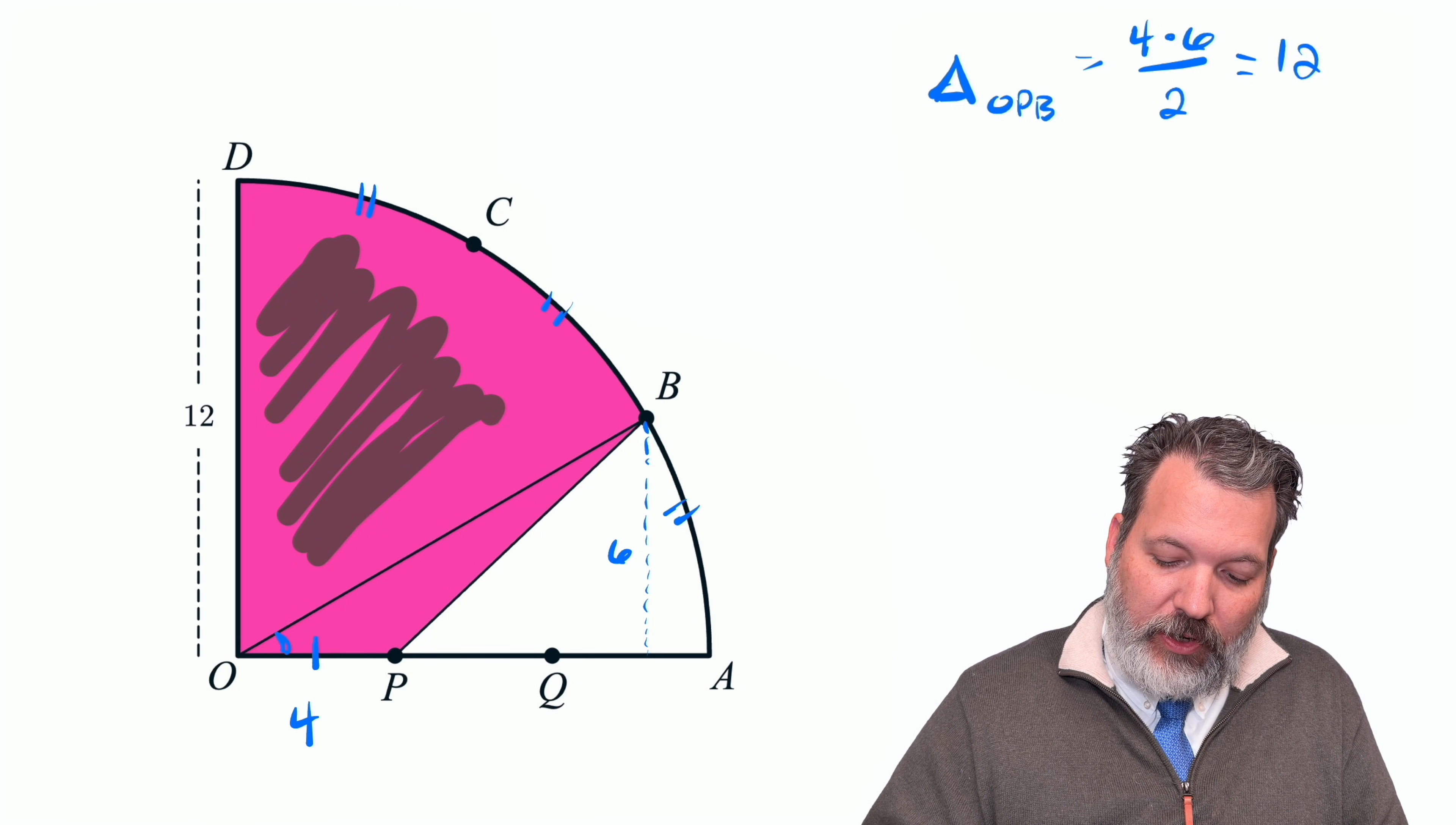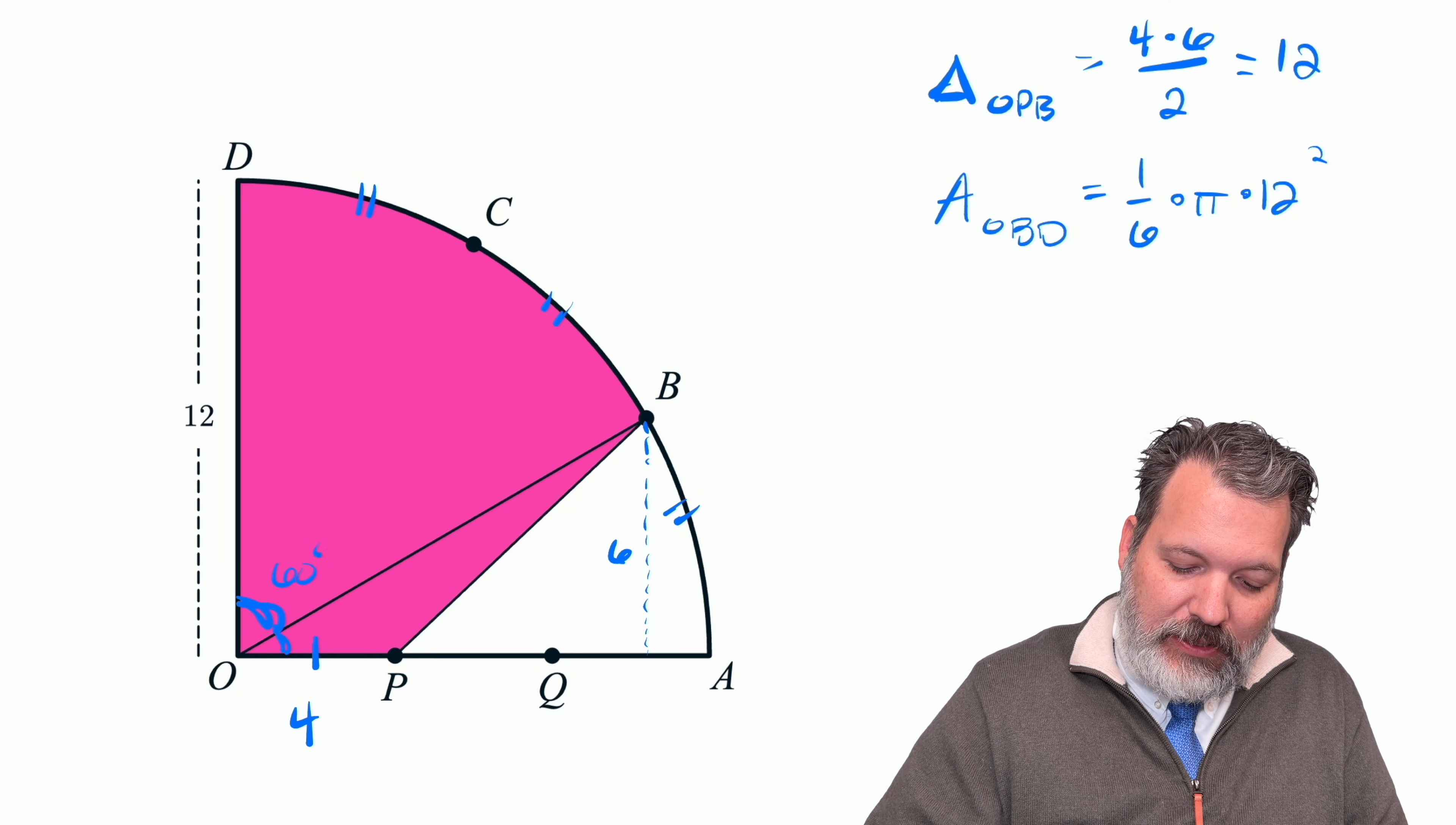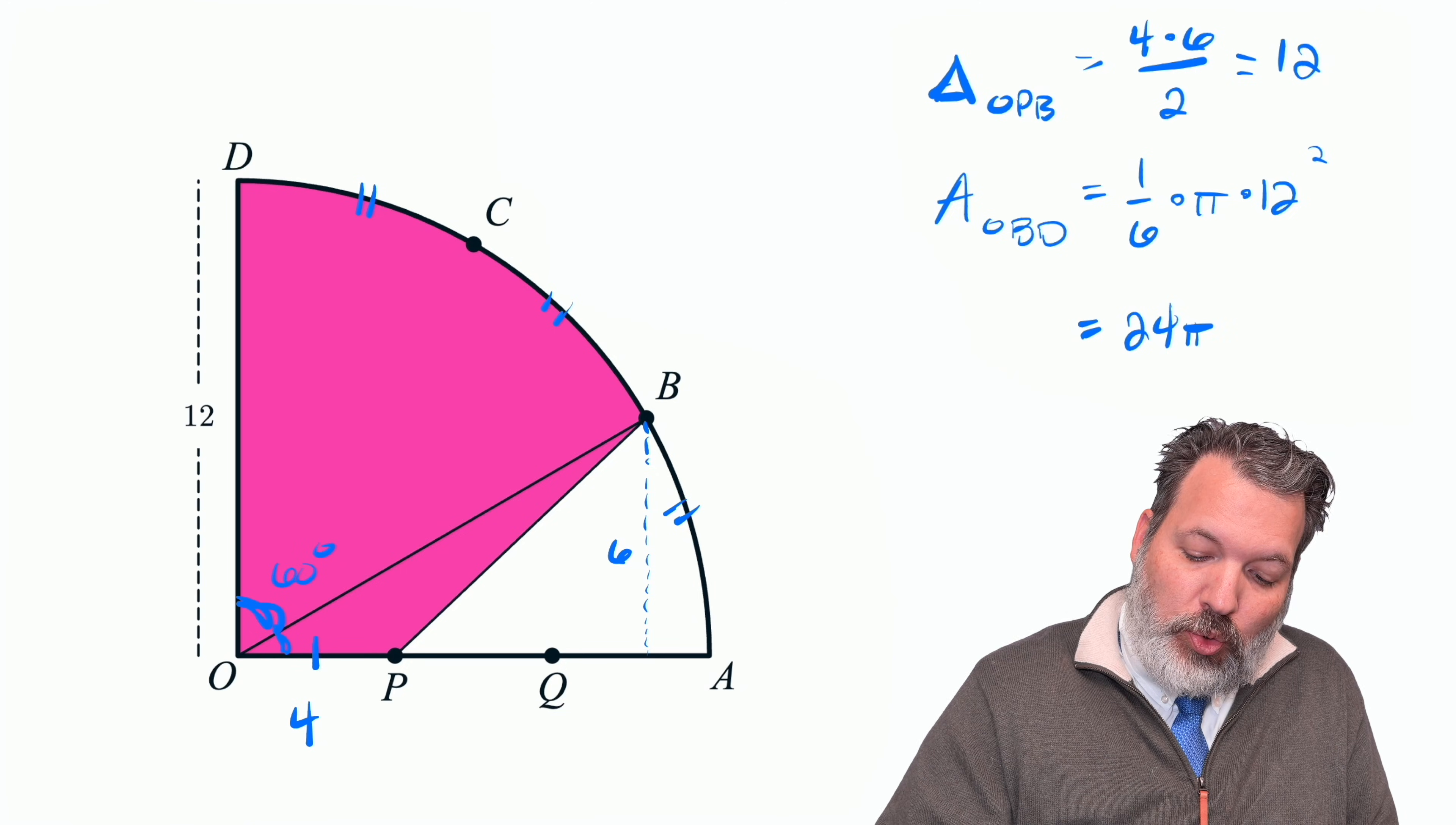For the rest of this sector over here, OBD, we're looking at an area that is one-sixth of what would be the full circle area, pi times 12 squared. The reason I know it's a sixth is that this angle here was 30 degrees, but again, they added up to 90, so this other angle must have been 60. And 60 degrees out of 360 degrees means we're looking at a sixth of the total circle. 12 squared is 144 times pi makes 144 pi, and then times the one-sixth gives us back 24 pi.